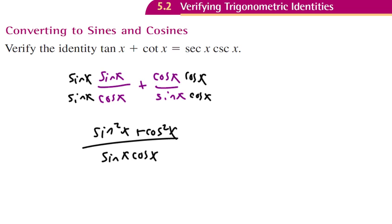Sine squared plus cosine squared. That's just one, right? So I'm going to just do one over our denominator, sine of x, and then cosine of x.